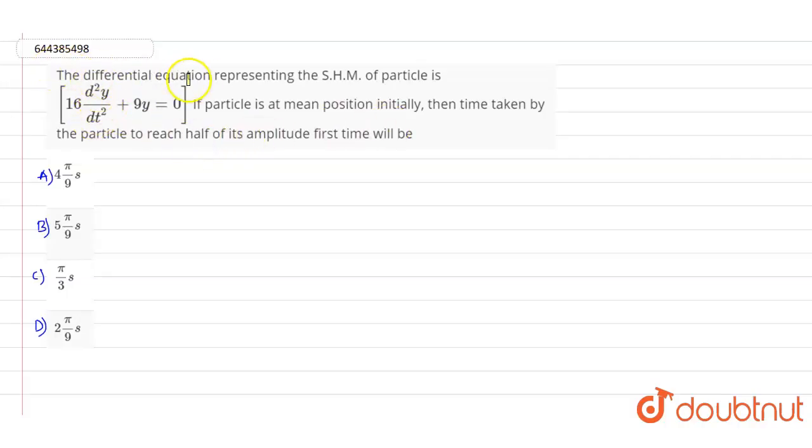So guys, here in this question it is given that the differential equation representing the simple harmonic motion of a particle is 16 d²y/dt² + 9y = 0. If particle is at mean position initially, then time taken by the particle to reach half of its amplitude first time will be. So this is the question that has been given.